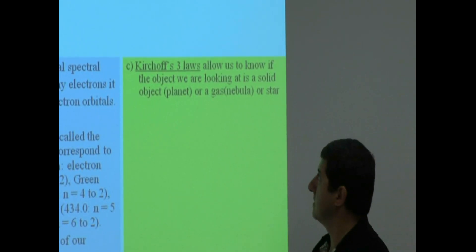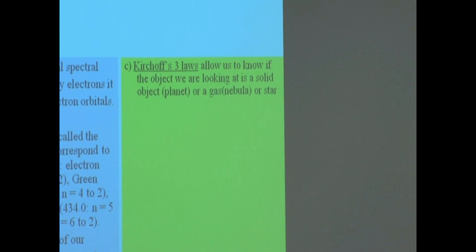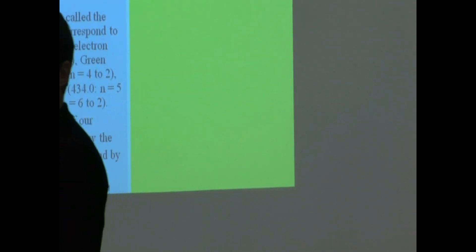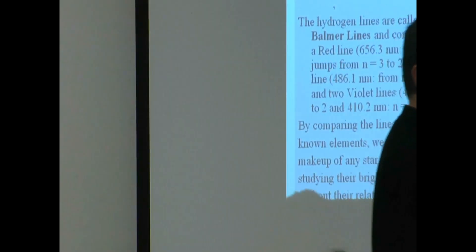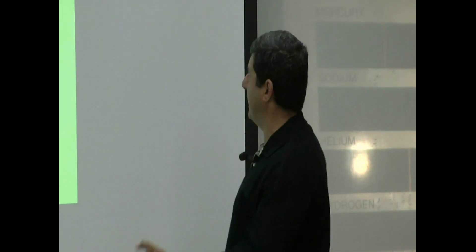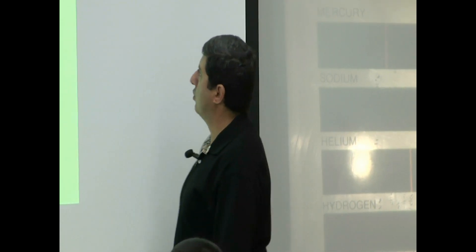Okay, next principle. This is known as Kirchhoff's laws. This principle is used to find out if the object that we are looking at is a star, or is it a gas, or is it a planet. So it allows us to know if the object we are looking at is a solid object, a planet, or a gas. The formal name of a gas is a nebula, or a star.